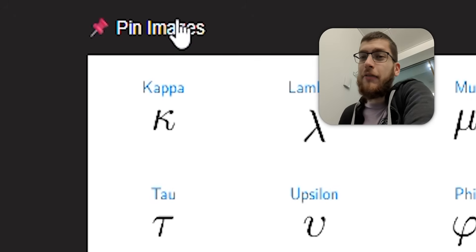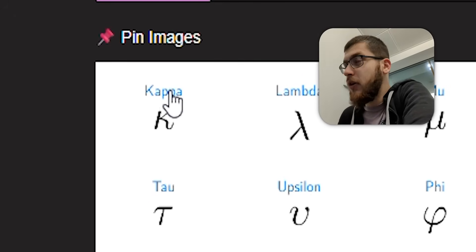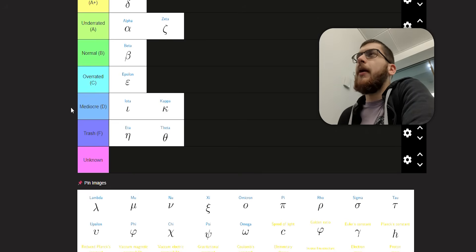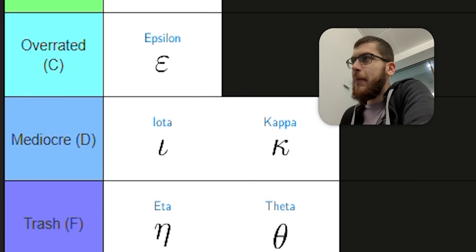Kappa. Not very easy to write. You have to put three lines, maybe two. It does look beautiful, in my opinion. So I'm going to put it in D tier.